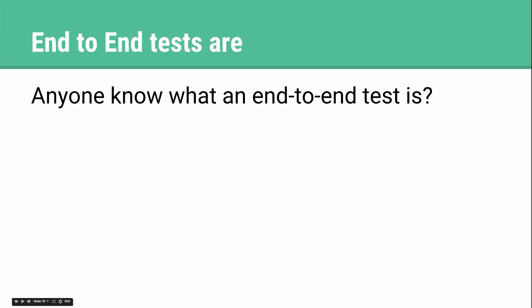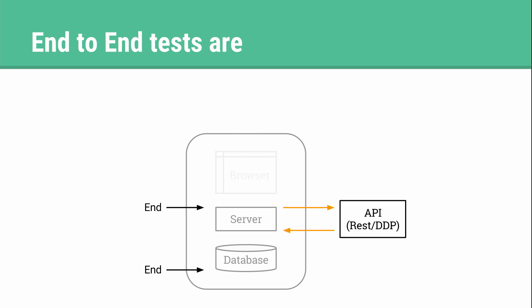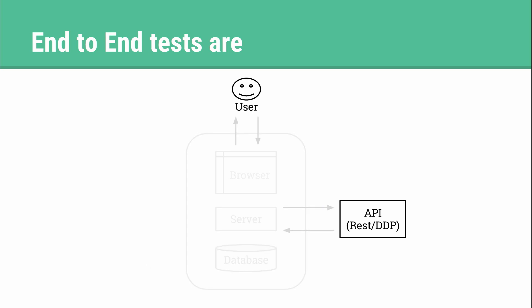I'd like to give you an end-to-end testing overview as well. When we talk about end-to-end, we talk about a test from a user's perspective — if the user is accessing the site. So the end-to-end boundary lies between the browser and the database, because that's the entire system. If we're talking about a REST API accessing the system, then the boundary lies between the server and the database. The important thing to realize is that end-to-end tests are from the perspective of the consumer.